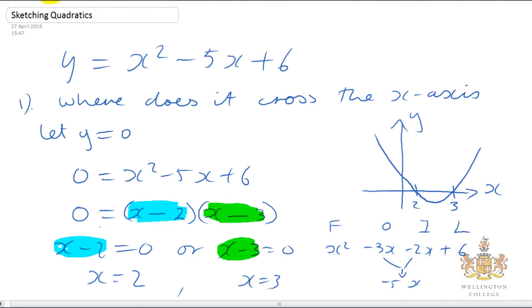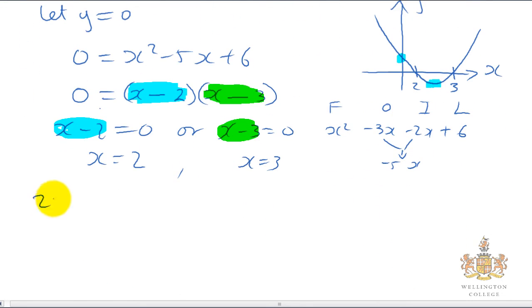Now the first thing we have to do is find out where it crosses the x-axis. The next thing we need to do is find out where it crosses the y-axis. And we also want to find the minimum point. So part two, let's find out where it crosses the y-axis.